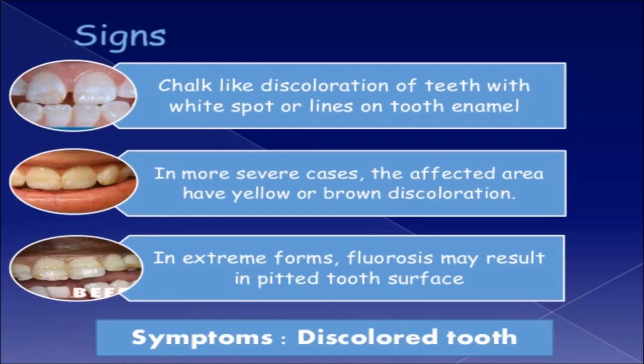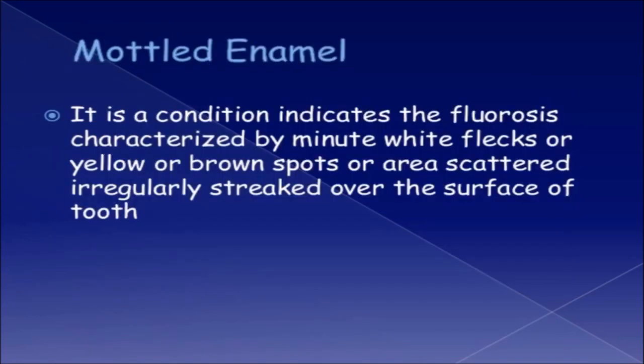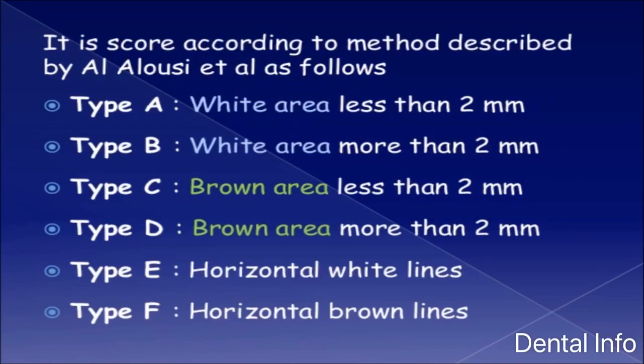Symptoms — Mottled Enamel: It is a condition indicating fluorosis, characterized by minute white flecks or yellow or brown spots scattered irregularly over the surface of the tooth. It is scored according to the method described by Al-Alouzi et al.